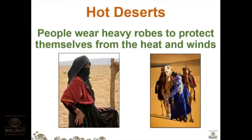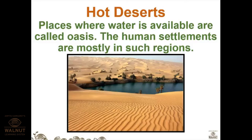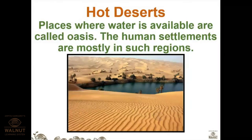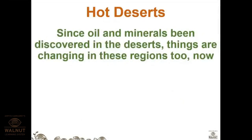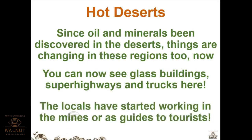People have domesticated dromedary camels and use them a lot. People have even domesticated goats and sheep in hot deserts. People wear heavy robes to protect themselves from the heat and wind, and mostly make animal products from leather and hair to sell. Places where water is available are called oases, and human settlements are mostly found in such areas. Since oil and minerals have been discovered in deserts, things are changing — you can now see glass buildings, super highways, and trucks. Locals have started working in mines or as guides to tourists.